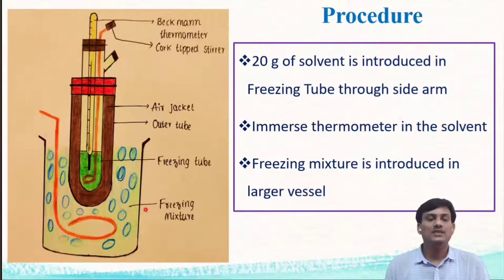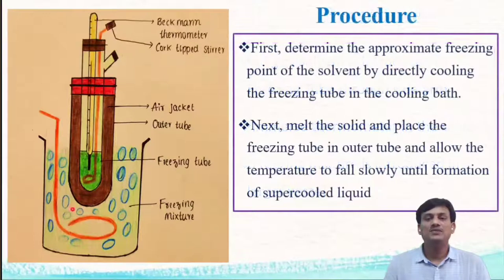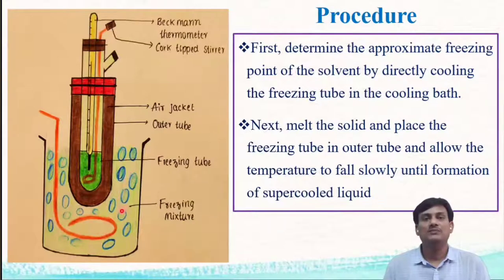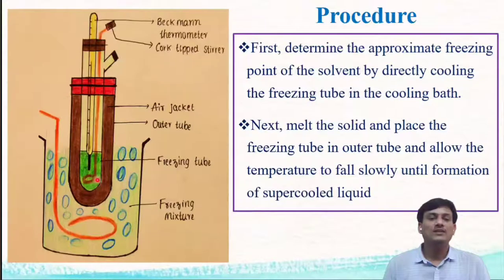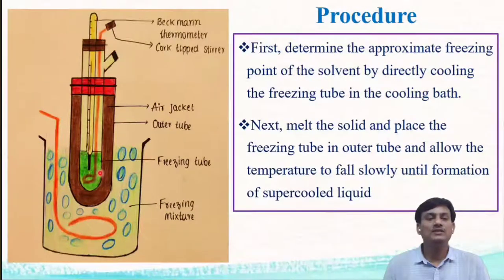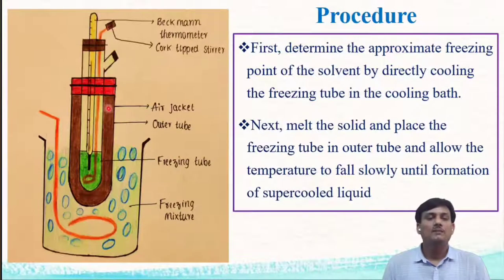In the cooling bath, the freezing mixture is homogenized using the platinum stirrer. First, we determine the approximate freezing point by placing the freezing tube directly in the cooling bath. After measuring the approximate freezing point, the solid is converted into liquid — the solid is melted. After melting, we fit the freezing tube with the outer tube, then place the whole setup on the cooling bath.